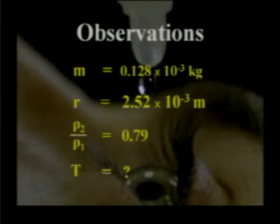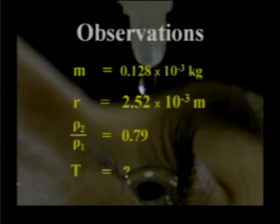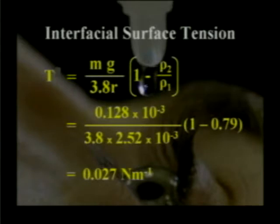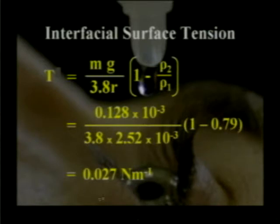The observations for our experiment: mass of one drop M = 0.128 × 10⁻³ kg; radius r = 2.52 × 10⁻³ m (using the same tube from the previous experiment); ρ2/ρ1 = 0.79. Substituting into the formula T = mg / (3.8r × (1 − ρ2/ρ1)): numerator = 0.128 × 10⁻³; denominator = 3.8 × 2.52 × 10⁻³ × (1 − 0.79). The interfacial surface tension between water and kerosene is 0.027 N/m.